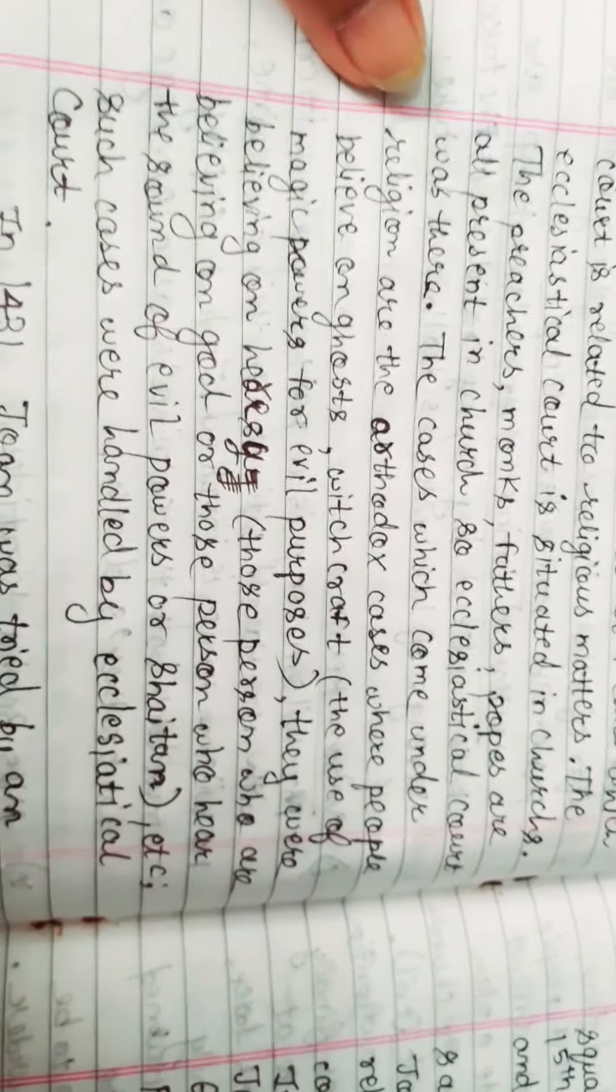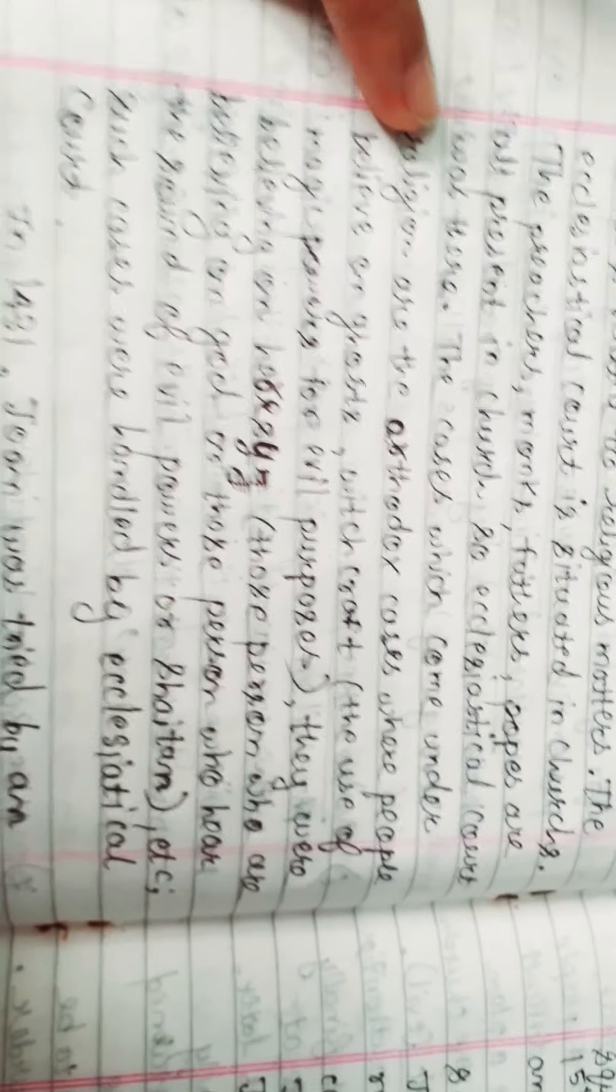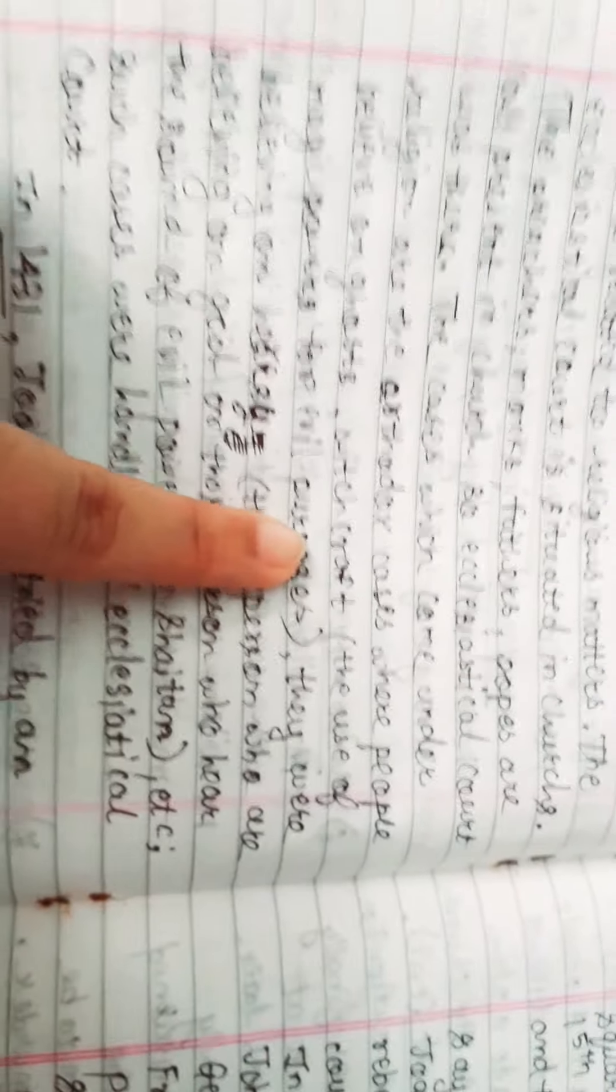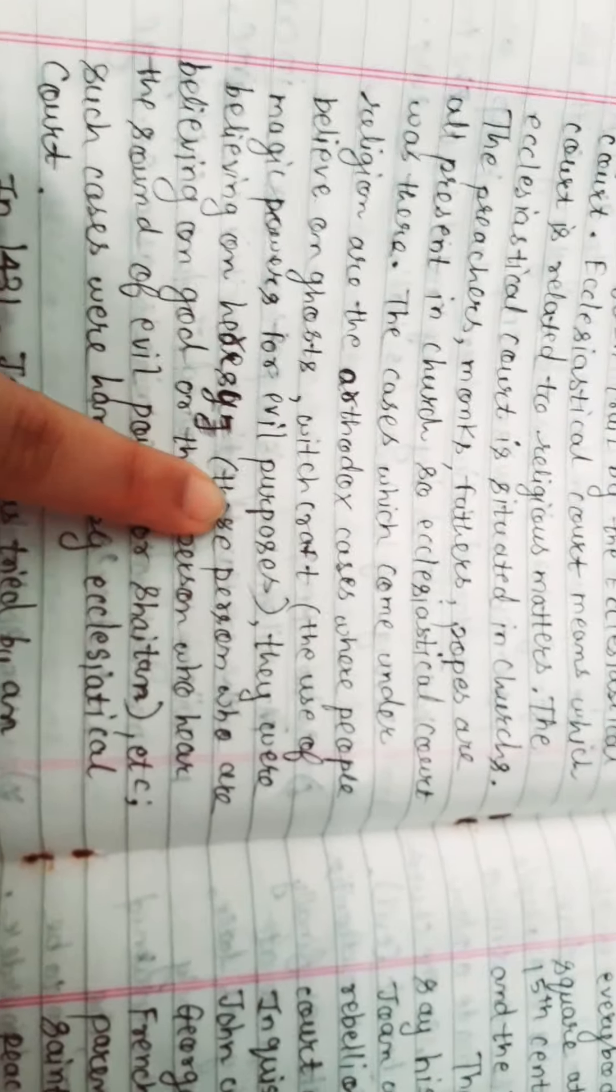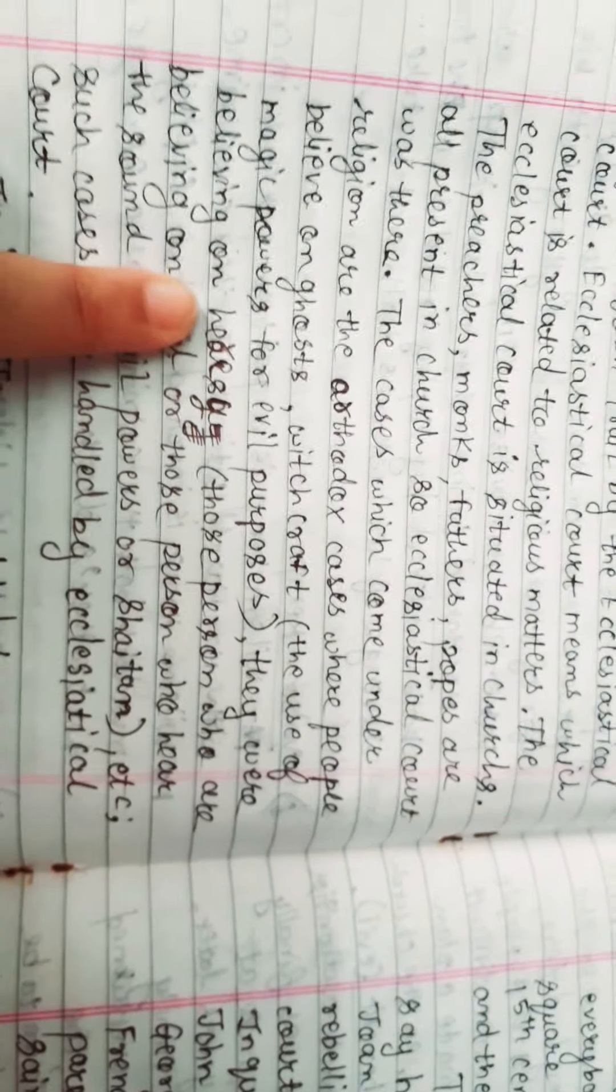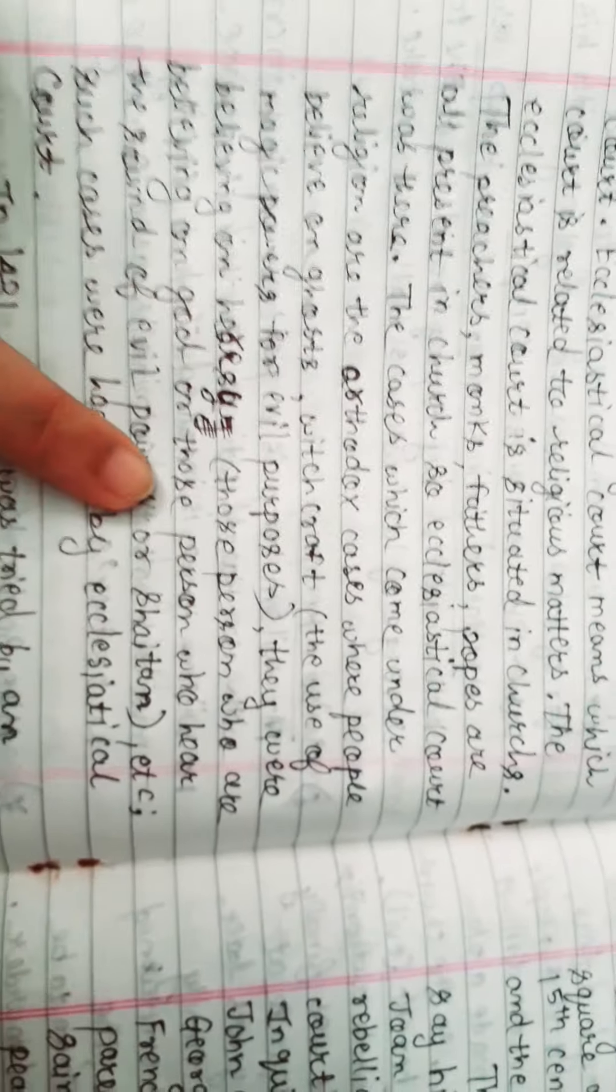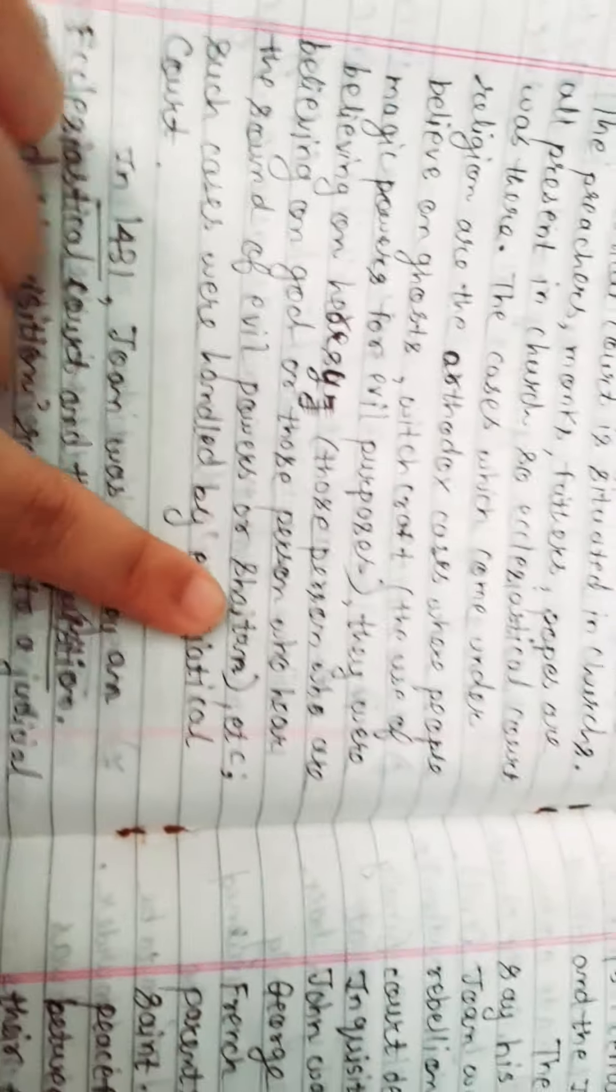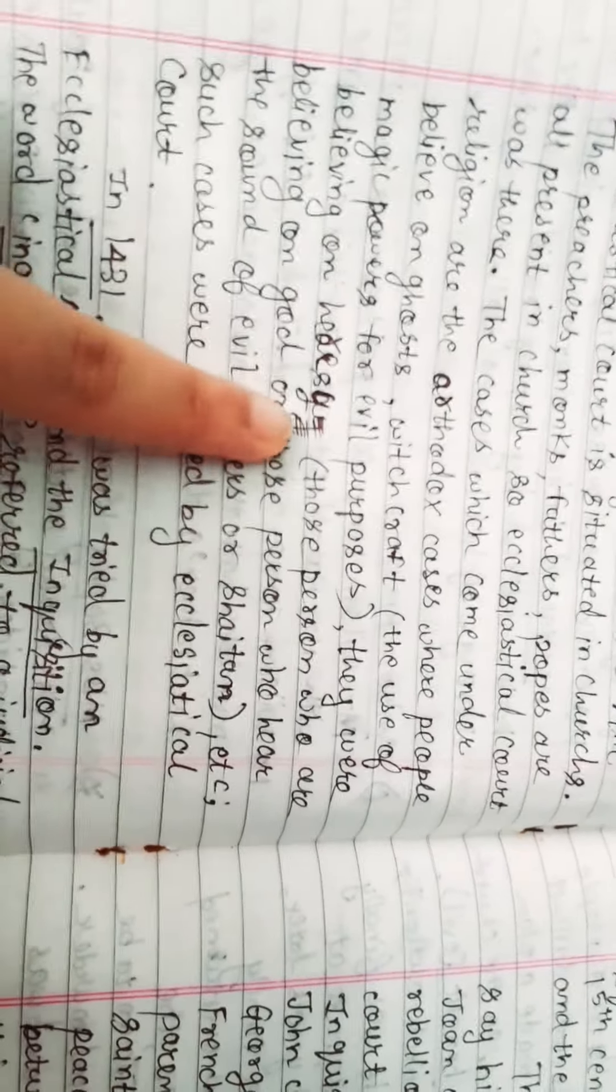The cases which come under religion are the orthodox cases where people believe in ghosts and witchcraft. Witchcraft means the use of magic powers for evil purposes. They were believing in heresy. Heresy means those persons who are believing in God or those people who hear the sound of evil powers or from the evil Satan, etc. It is called heresy.